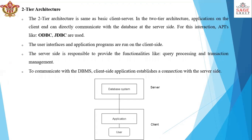Now, two-tier architecture. The two-tier architecture is based on client-server architecture. The application runs on the client side and directly communicates with the database at the server side. For interaction, APIs like ODBC and JDBC are used. The user interface and application programs run on the client side.